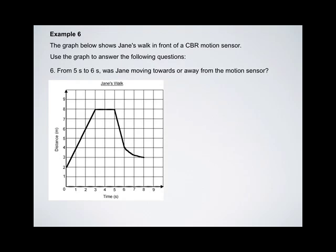From 5 seconds to 6 seconds, we have this portion of the graph here. At 5 seconds, Jane was 8 meters away, and at 6 seconds, Jane is 4 meters away. Since her distance is decreasing as the time increases, we know that Jane is moving toward the sensor.